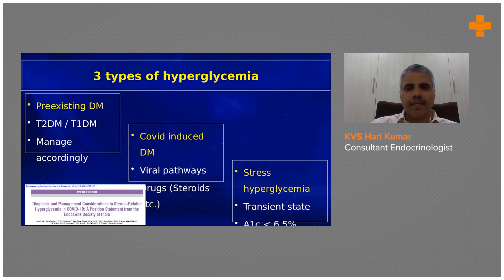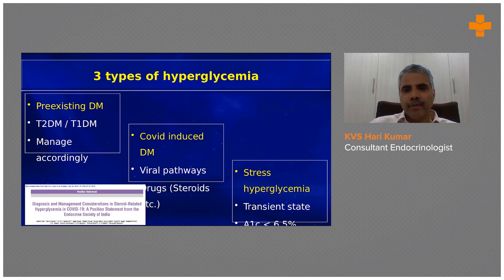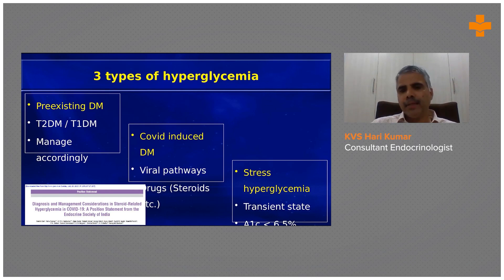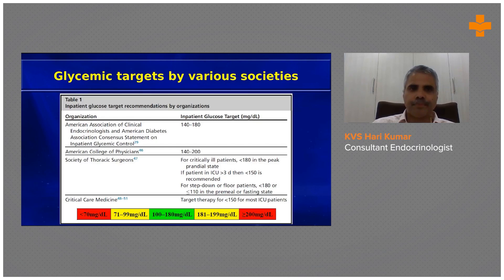The third type is stress hyperglycemia, which is a transient state that can be identified only by looking at the HbA1c — it has to be below 6.5, which indicates it's a transient state of hyperglycemia. The diagnostic criteria and treatment options remain the same across this spectrum.